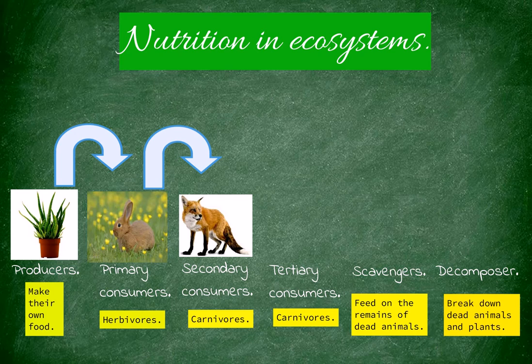Secondary consumers feed on primary consumers, so they are carnivores. As an example, I can tell you foxes. A fox can eat rabbits.